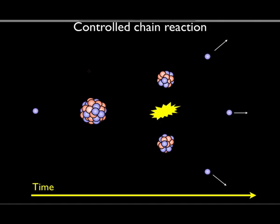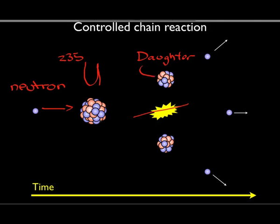I'm going to show you what happens in a controlled chain reaction. Previously, we've seen how a single neutron, moving nice and slowly, can actually cause a big uranium-235 nucleus to become unstable, so that it splits up into two daughter nuclei.